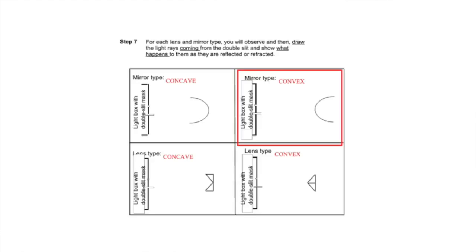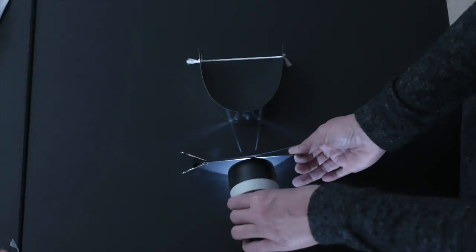And now the second diagram. Here are the light rays for the convex mirror.